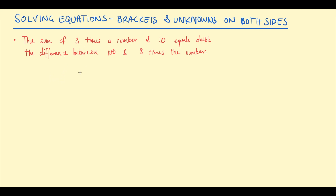Let's start with examples involving brackets. Example 1: 2 times (x plus 3) equals 10. There are a couple of ways you can approach equations with brackets. You can either expand out the brackets first, or you can think about dividing by the coefficient of 2. Remember, whatever we do to the left hand side we do to the right, and the whole goal is to find the value of x and get x by itself on the left hand side.